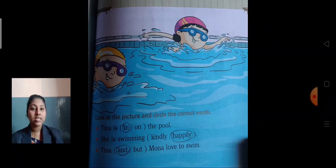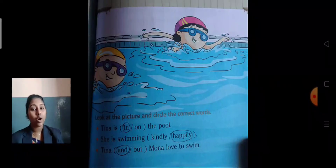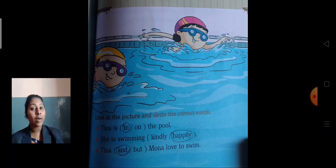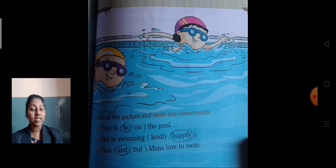Second one: She is swimming — kindly or happily? You can see she is swimming so happily. So here you want to circle the word 'happily'. Tina is swimming happily.